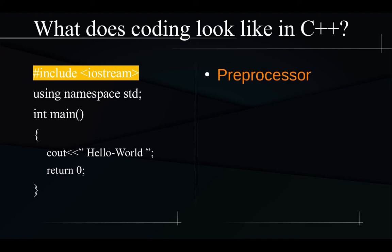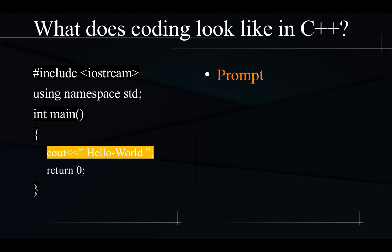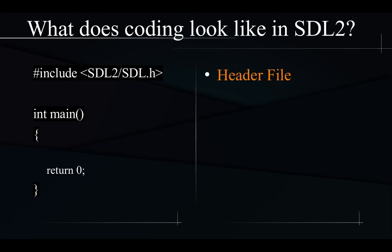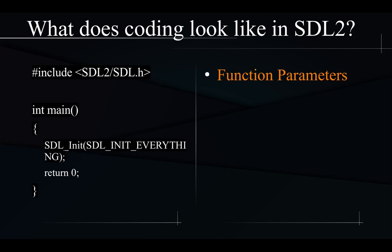We first look at the preprocessor; we have a namespace, there's a main function, a prompt to give some user input for the output streams, and a terminating statement at the end of it. If you're not familiar with header files, there's a library — it's an application programming interface. We just add a pound include sign, call the initialization function SDL_init, and pass in a flag. We call SDL_INIT_EVERYTHING as the function parameter.